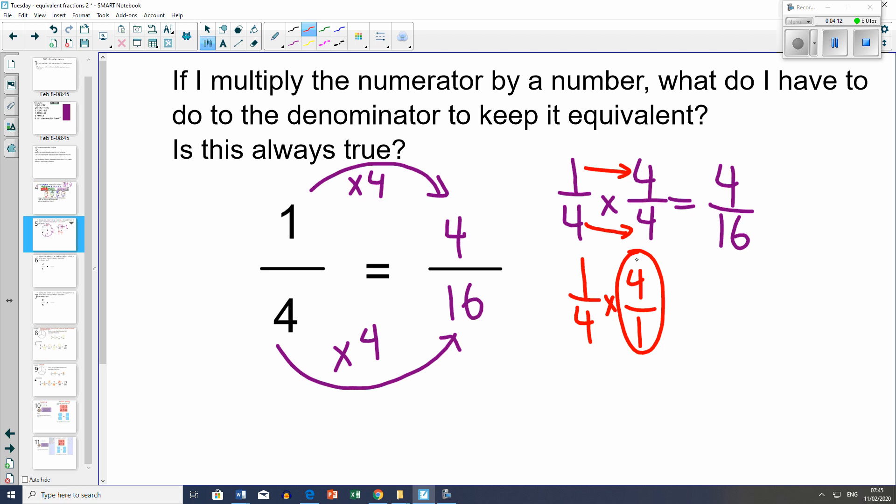Because 4 over 1, 4 divided by 1 is 4, which is a whole number. So then it would be 4 over 4, which equals 1. So it's not the same at all. We always have to make sure it's the same number on the top and the same number on the bottom.